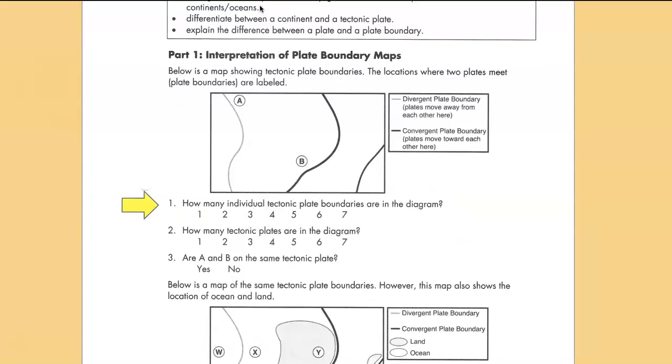How many individual tectonic plate boundaries are in the diagram? There's number one, it's a divergent plate boundary; there's number two, which is convergent; and there's number three. So there are three tectonic plate boundaries in the diagram. How many plates are in the diagram? Well the plates are separated by the boundaries, so we've got one, two, three, four plates.